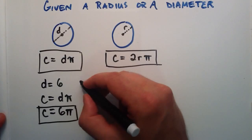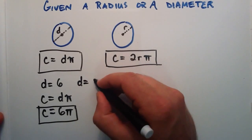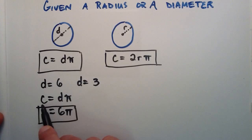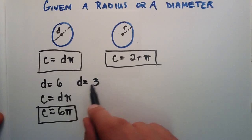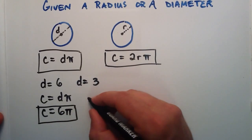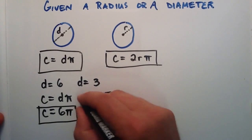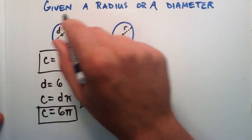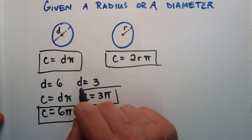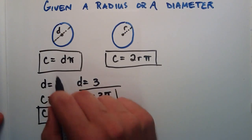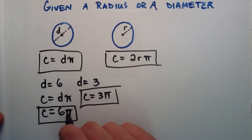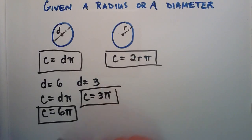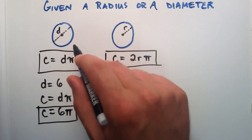So what happens if our diameter is equal to 3? We simply plug it into the circumference equals diameter times pi. So the diameter this time is 3, so it's 3 times pi — c equals 3 times pi. It's really just that simple. If you're given a diameter of a circle, the distance around the outside is going to be the diameter times pi. So any diameter you have, you multiply it by pi and you have the circumference, or the distance around the outside of a circle.